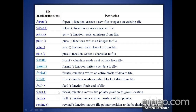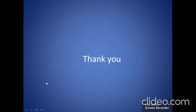Next, the random access functions: fseek — moves the file pointer position to a given location; ftell — gives the current position of the file pointer; and rewind — moves the file pointer position to the beginning of the file. So this is the end of this video lecture. Thank you all.